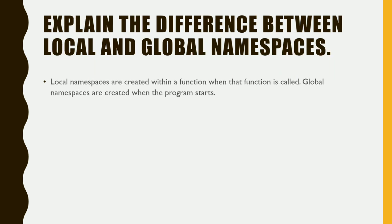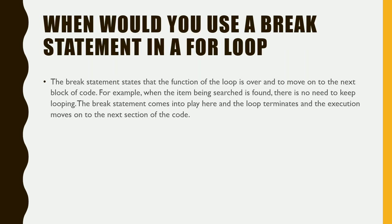Explain the differences between local and global namespaces. Local namespaces are created within a function when the function is called, whereas global namespaces are created when the program starts.